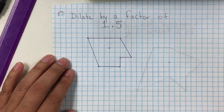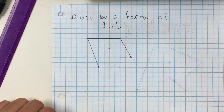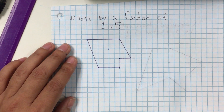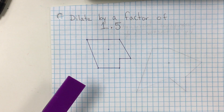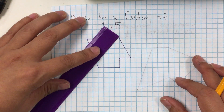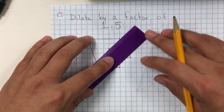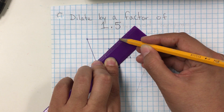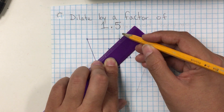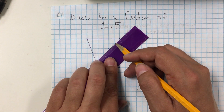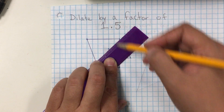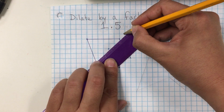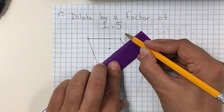Let's do another one. It says dilate by a factor of 1.5, meaning one and a half times. We do the same thing — this is tricky because it's hard for some people to picture one and one-half. In this example, we have two spaces from the point to the vertex, so we go one, two — and then we add half of that. Half of two is one, so we add one more, and that's the new vertex.